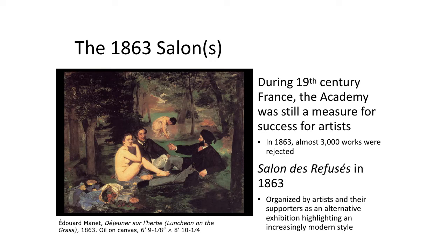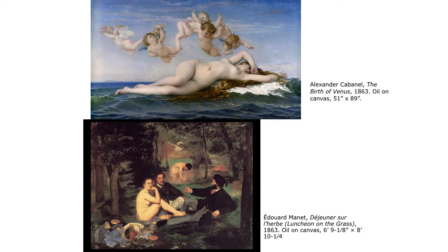We're going to take a look at a particularly influential work shown in the 1863 exhibition of rejected art — Manet's Déjeuner sur l'herbe, also French for 'Luncheon on the Grass.' A good way to show the discrepancies between the avant-garde and the salon conservatives is to compare Manet's Luncheon on the Grass with another artist known as Cabanel and his artwork The Birth of Venus.